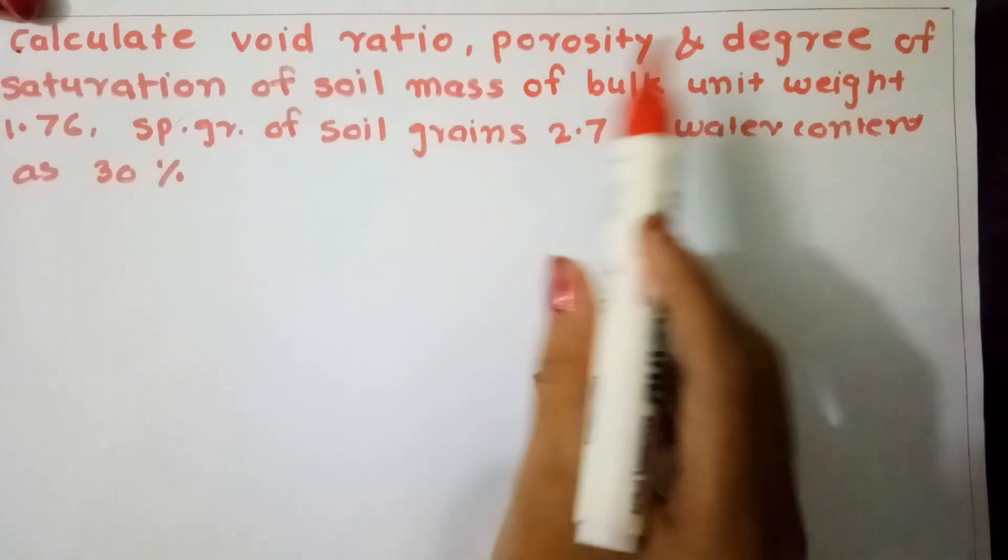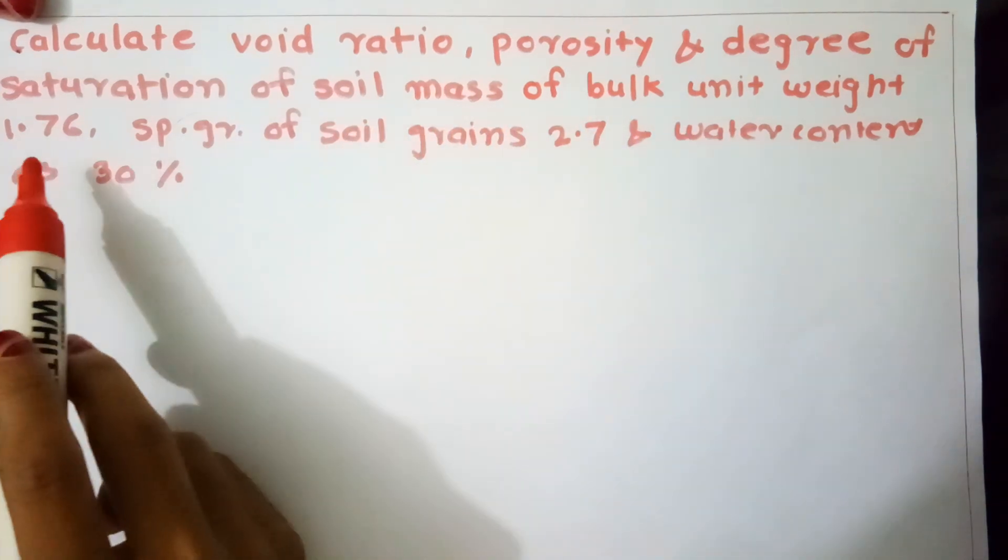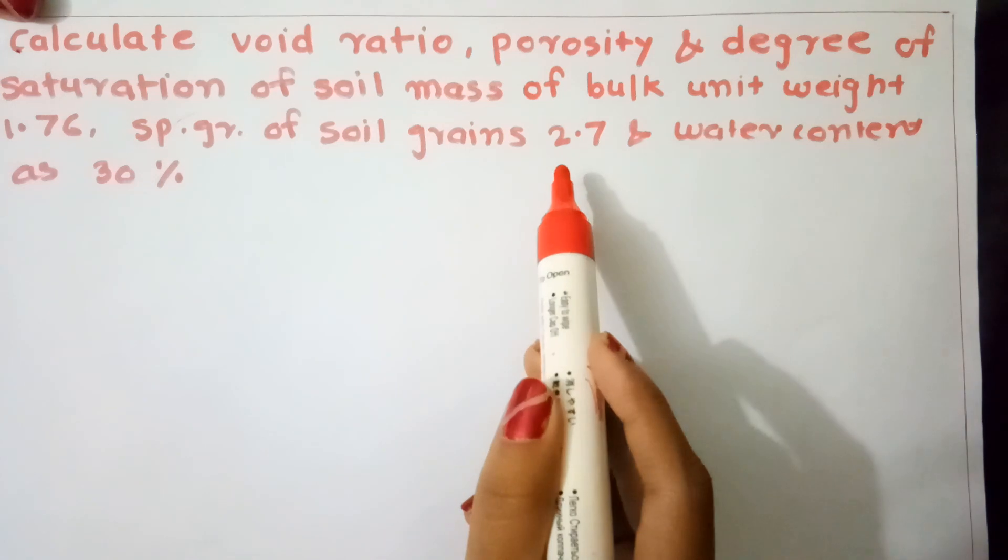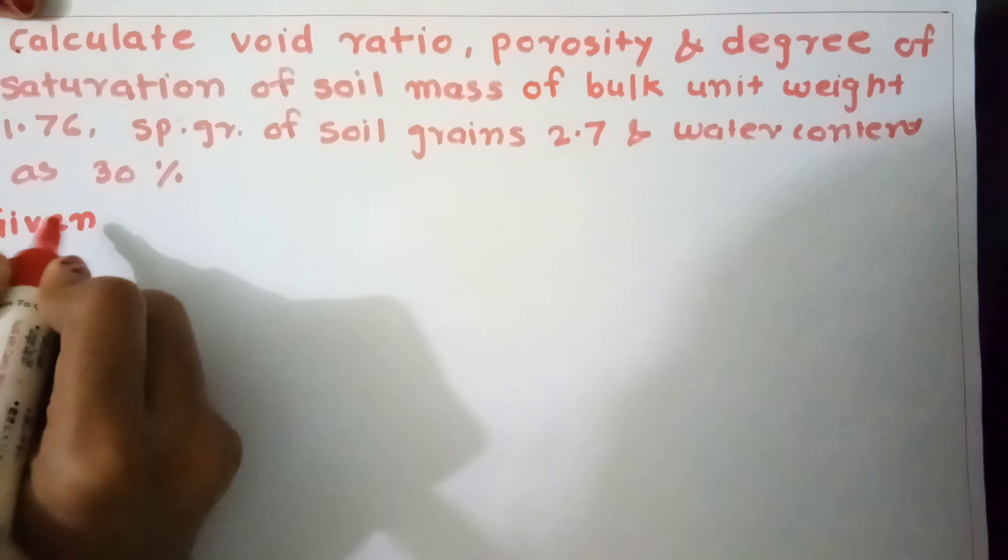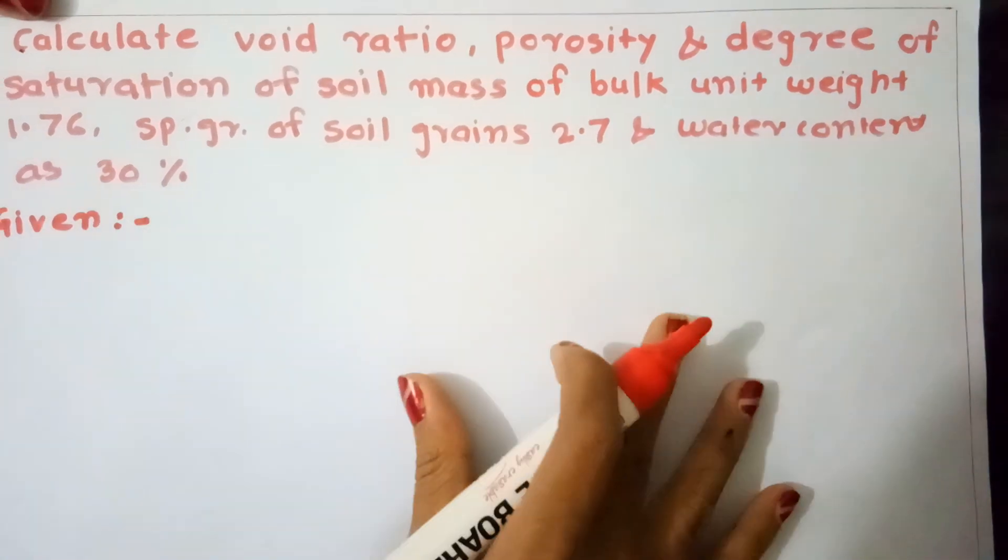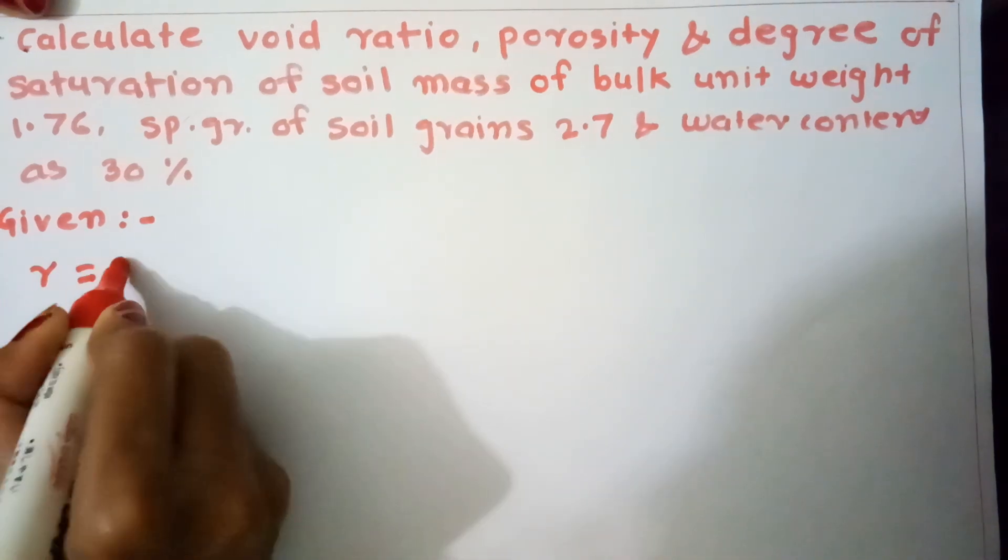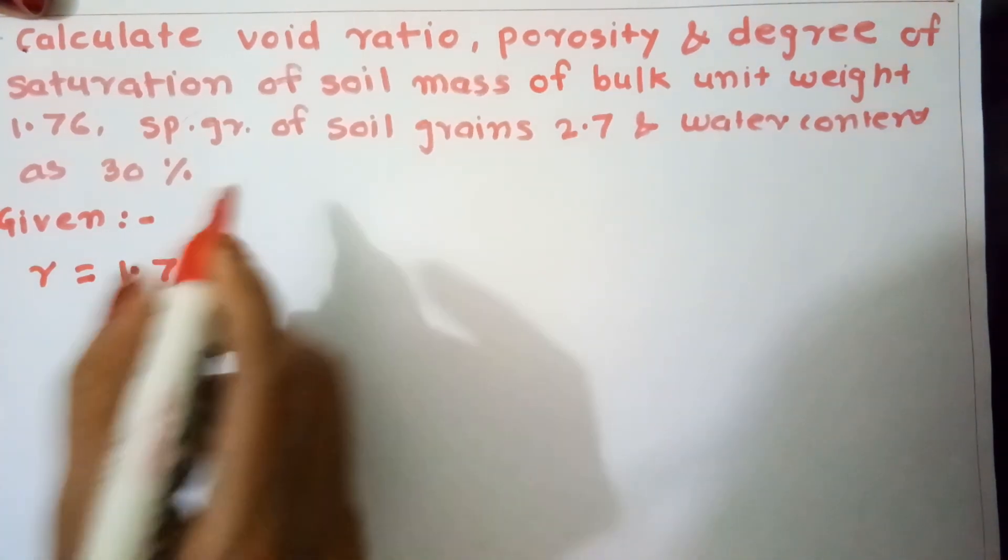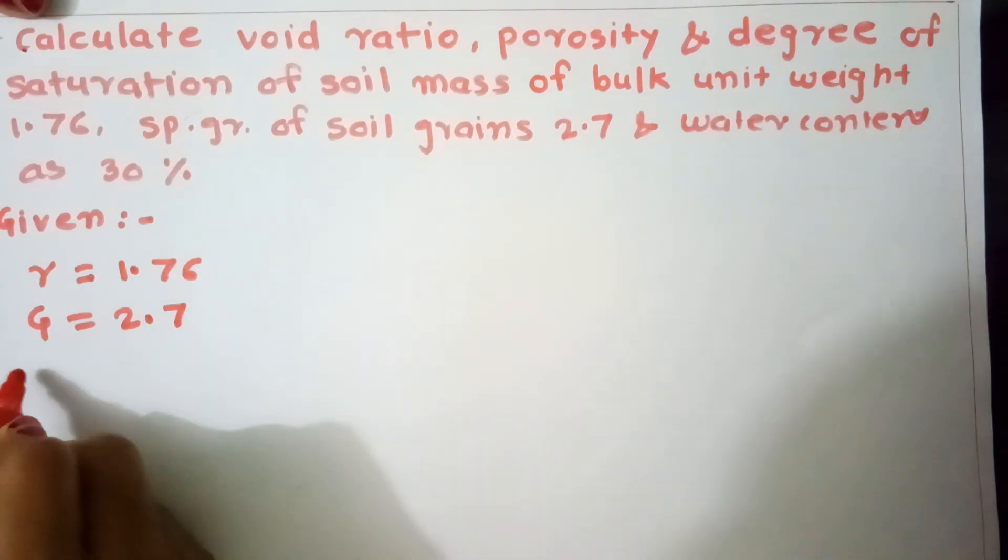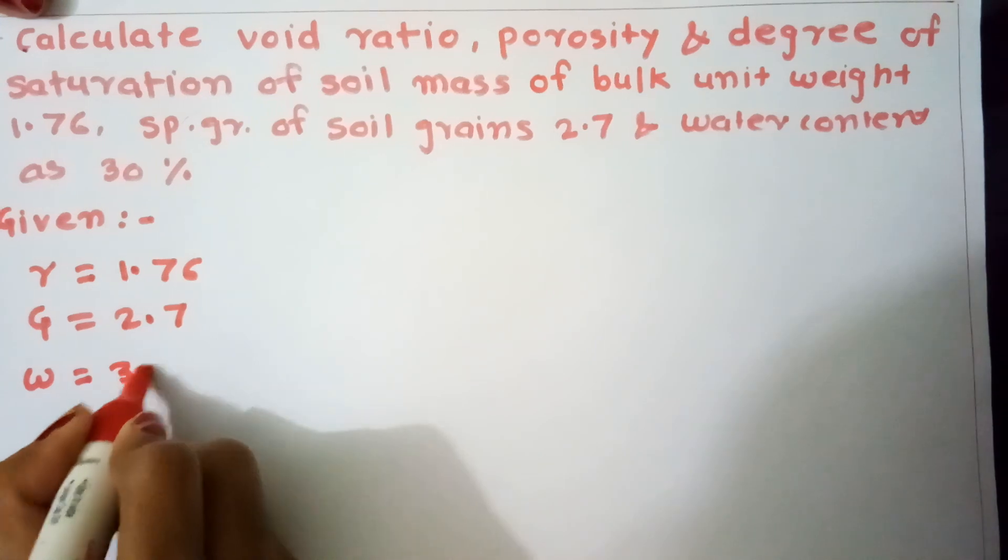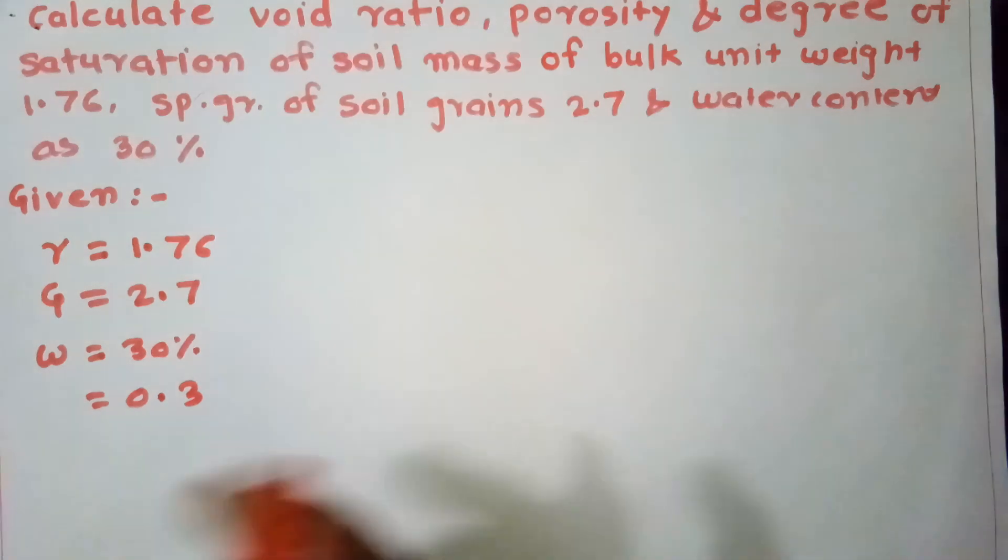Calculate void ratio, porosity, and degree of saturation of soil mass with bulk unit weight 1.76, specific gravity of soil grains 2.7, and water content 30 percent. Given: unit weight γ = 1.76, specific gravity G = 2.7, water content w = 30 percent, which is 0.3.